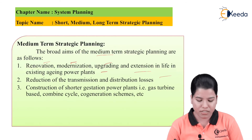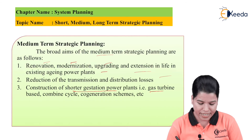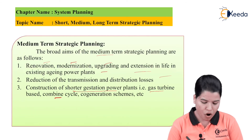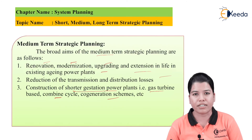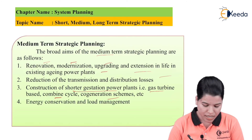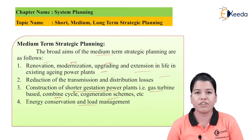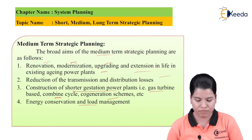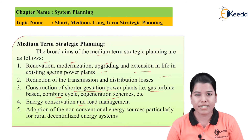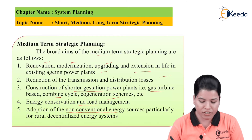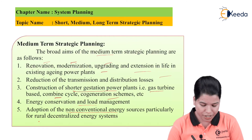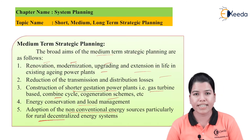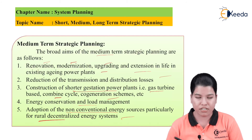Next aim is construction of shorter gestation plants, that is gas turbine based, combined cycle based, or co-generation schemes. Next aim is energy conservation and load management, which is very important. Next aim is adoption of non-conventional energy sources, particularly for rural decentralized energy systems.